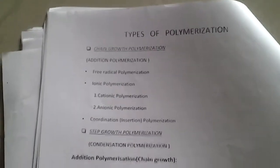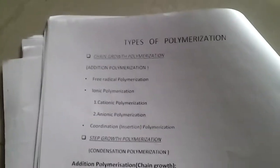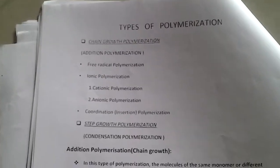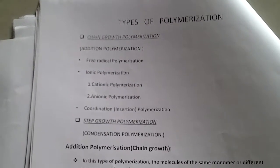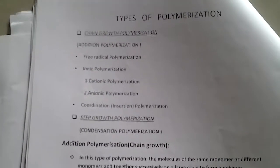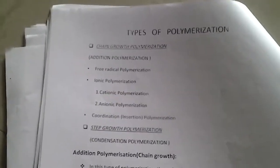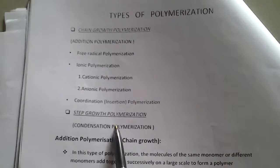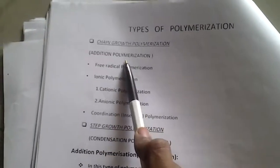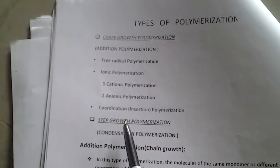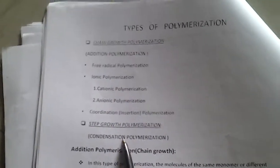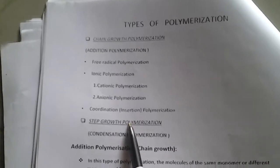Friends, welcome back. In the coming videos we will see the types of polymerization. We have completed its classification and now we are entering into its types. Basically, polymerization is of two types: addition polymerization and condensation polymerization. Addition polymerization is called chain growth polymerization, whereas condensation polymerization is known as step growth polymerization.